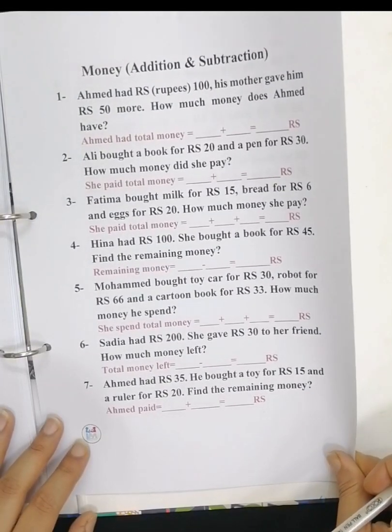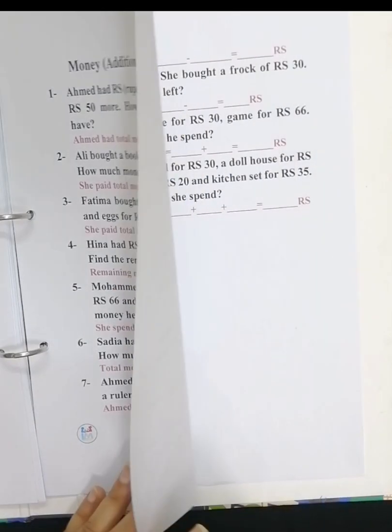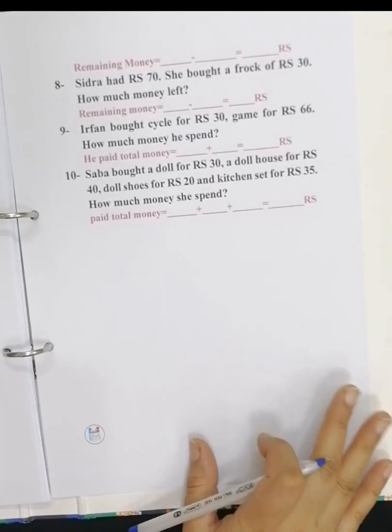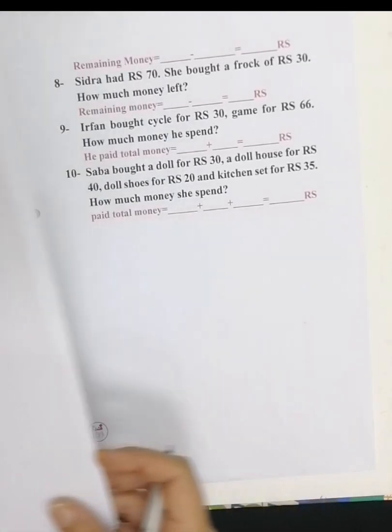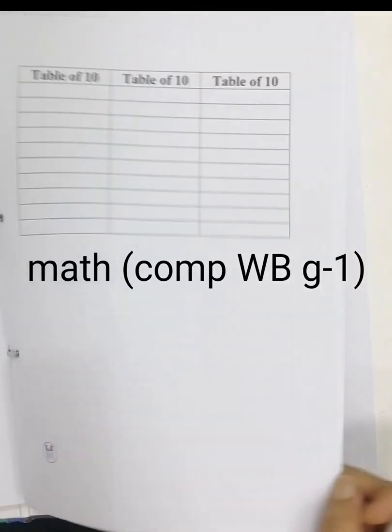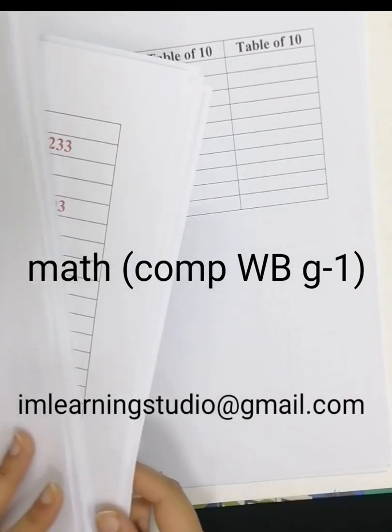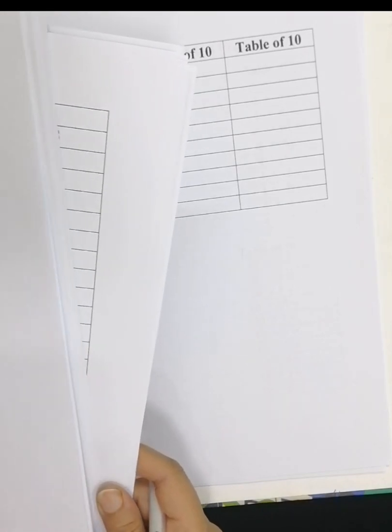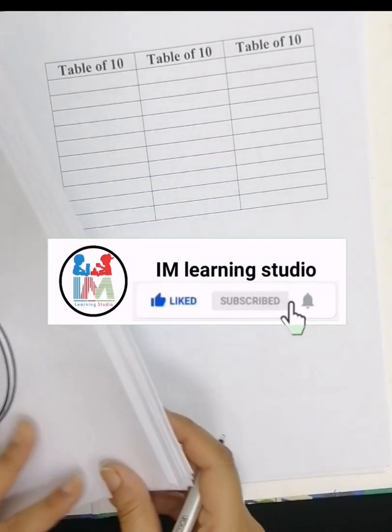And next is money. This is all for now, and if you are interested in getting soft copy of this workbook, just email us with a code which is on your screen now and our email address is iamlearningstudio at gmail.com. For more learning content subscribe our channel and appreciate our efforts. Thank you.